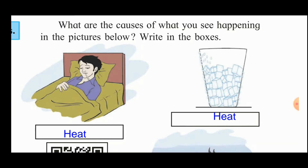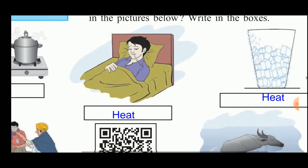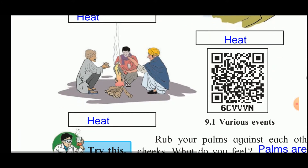In the third case, ice is kept in a glass and water droplets are seen on the outer surface of the glass. This happens because water vapor is present in the surrounding air. When this water vapor comes in contact with the cold surface of the glass, it condenses to form water droplets that get accumulated on the outer surface.